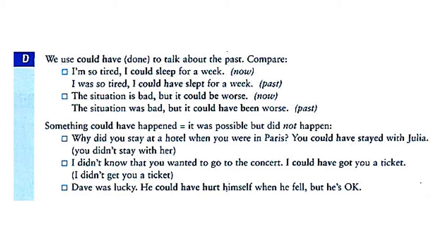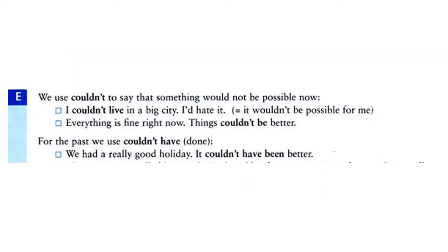'But you didn't stay with Julia.' 'I didn't know that you wanted to go to the concert — I could have got you a ticket, but I didn't.' 'Dave was lucky — he could have hurt himself when he fell, but fortunately he is okay, unharmed.' We use 'couldn't' to say that something would not be possible now: 'I couldn't live in a big city, I'd hate it.' 'Everything is fine right now — things couldn't be better.' For the past, we use 'couldn't have done': 'We had a really good holiday — it couldn't have been better.'